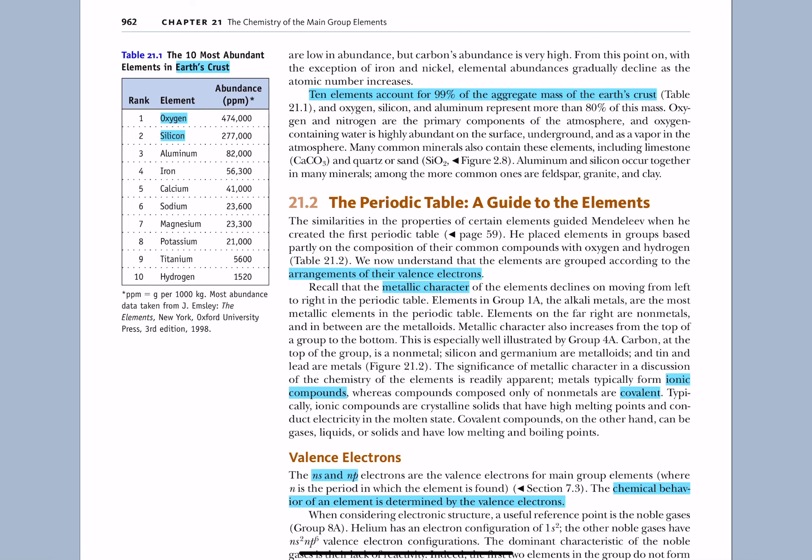So, we have lots of oxygen. And, of course, a lot of that is in water and some of that is in atmospheric oxygen. And just about all the minerals in the Earth's crust have oxygen in them. Silicon is number two. And just about all the minerals and the rocks in the Earth's crust have silicon in them.